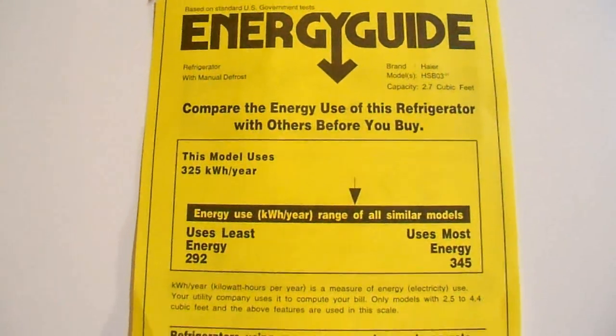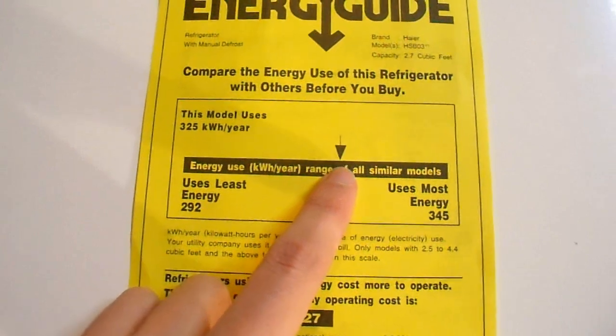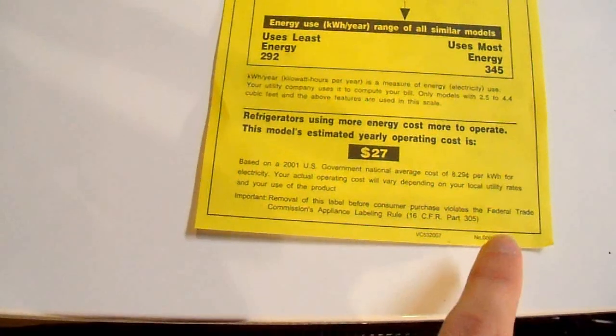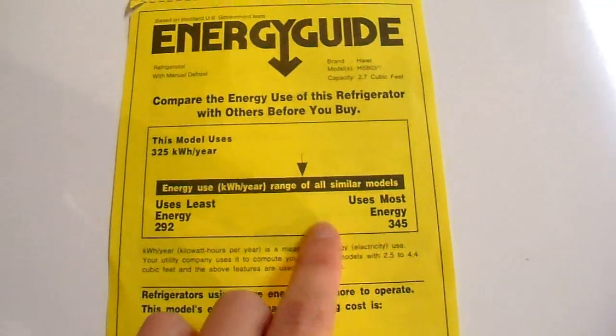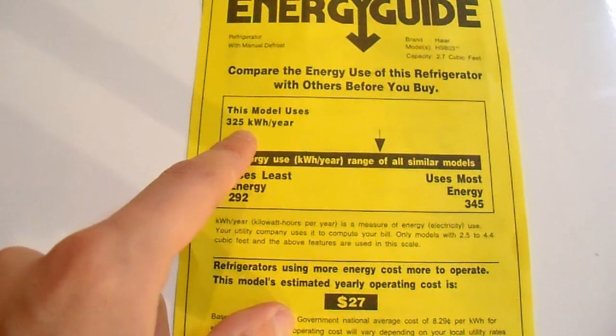This is the energy information guide that came with it when it was new. You can see that it's about middle of the range back in 2006, or whenever this was sold. I forget exactly, but it uses about 325 kilowatt hours a year. And to put that in perspective, a full-size upright refrigerator